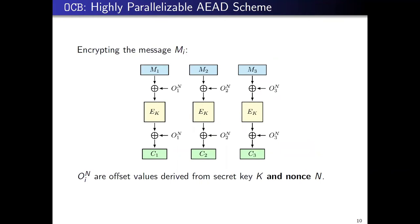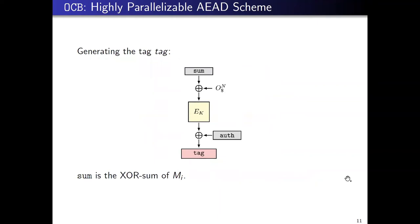For encryption, you do something similar. We partition the message into blocks and XOR some offset value before and after encryption. This offset value is derived from both the secret key and the given nonce. Finally, for tag generation, we take the XOR sum of all messages, XOR with another offset value and perform encryption. The authentication value generated from processing the associated data will be XORed here to give you the final tag value.